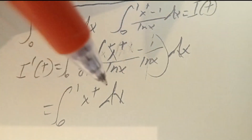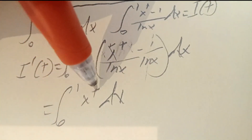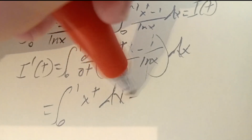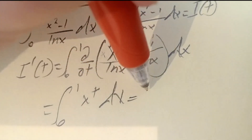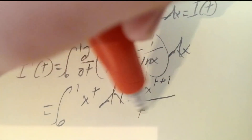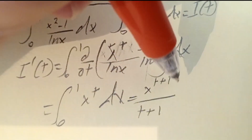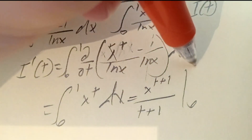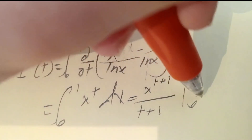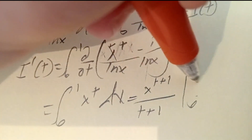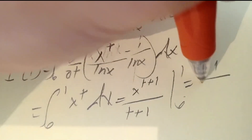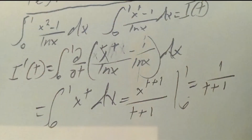We're still integrating with respect to x, and this is just a normal polynomial. So this is x to the (t+1) over (t+1), evaluated from 0 to 1. At 0, it goes to 0. At 1, it just goes to 1 over (1+t).